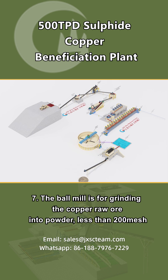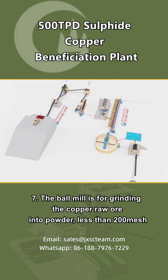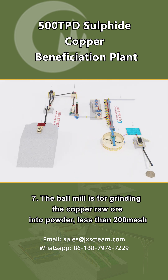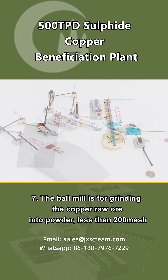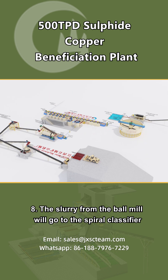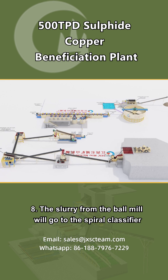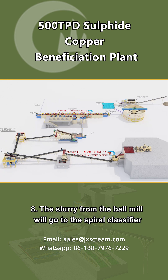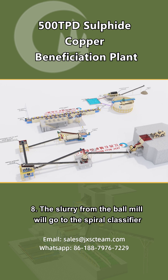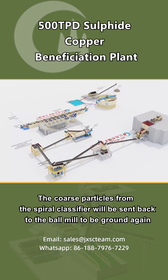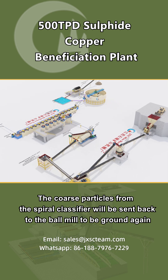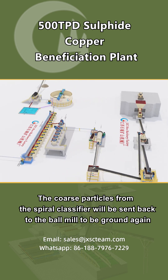The ball mill is for grinding the copper raw ore into powder less than 200 mesh. The slurry from the ball mill will go to the spiral classifier. The coarse particles from the spiral classifier will be sent back to the ball mill to be ground again.